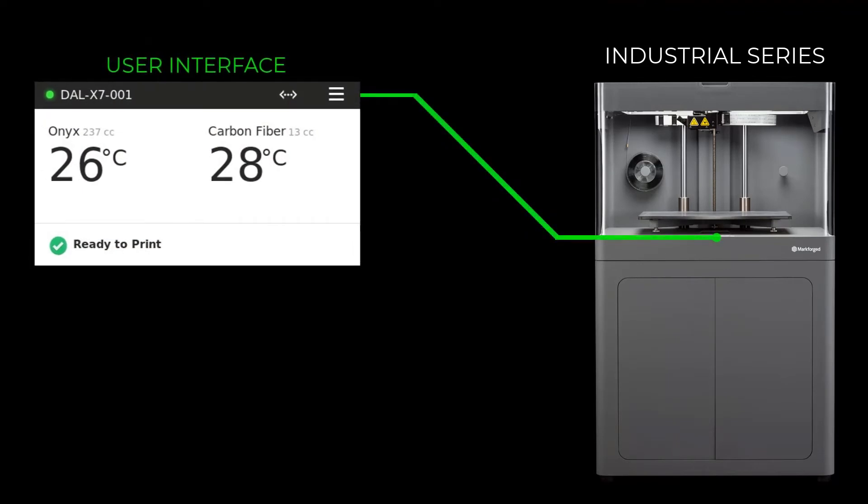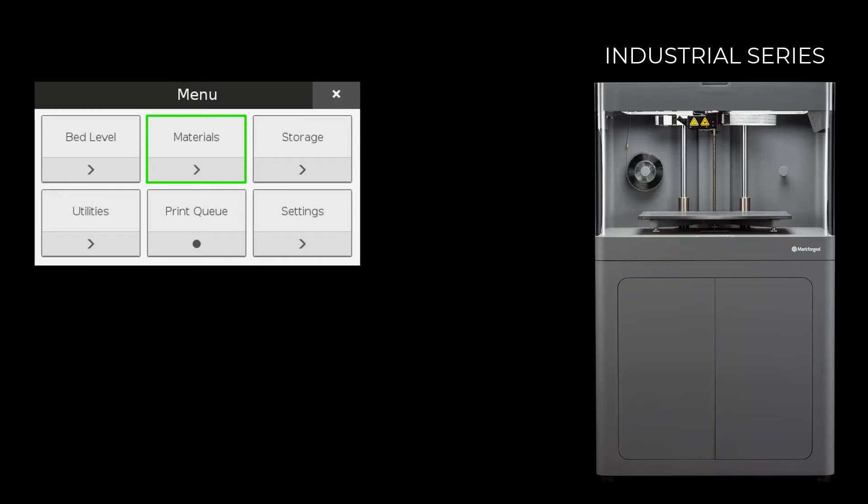On the printer's user interface, select the menu icon from the dashboard. Select the materials tile from the menu options. Select the load plastic tile to begin the load plastic routine.